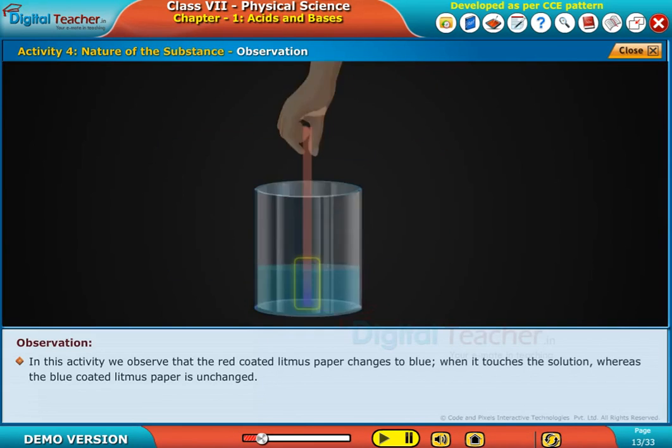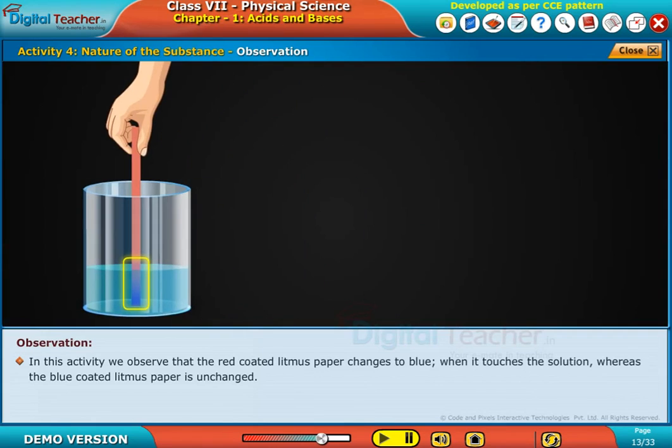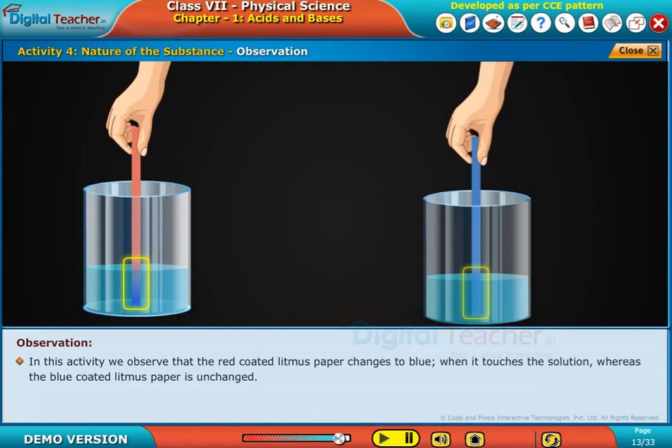In this activity, we observe that the red-coated litmus paper changes to blue when it touches the solution, whereas the blue-coated litmus paper is unchanged.